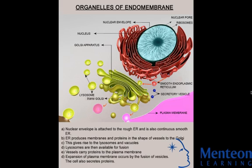The Golgi apparatus is a series of multiple compartments where molecules are packaged for delivery to other cell components or for secretion from the cell. Vacuoles are found in both plant and animal cells. In animal cells they're smaller, and in plant cells they're much bigger. Vacuoles basically maintain the shape of the cell and also store waste products.